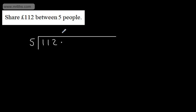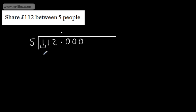I'm going to put the decimal place here, and then I'm going to have some zeros — I might need more zeros for other numbers, but 3 should be OK for now. What I'm going to do is look to see if 5 goes into 1. The answer is no, so I put a 0 here.